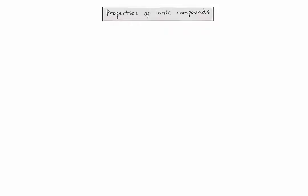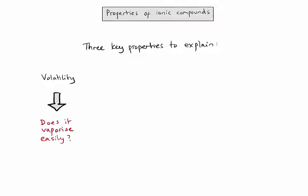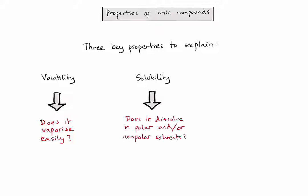In IB chemistry there are three key properties that we need to know about and be able to explain. The first property is volatility, and the question we're looking to ask is does an ionic substance vaporize easily or turn into a gas. The second property is solubility, and we're interested in whether ionic compounds dissolve in polar and/or non-polar solvents. Thirdly, we're interested in electrical conductivity — do ionic compounds conduct electricity?